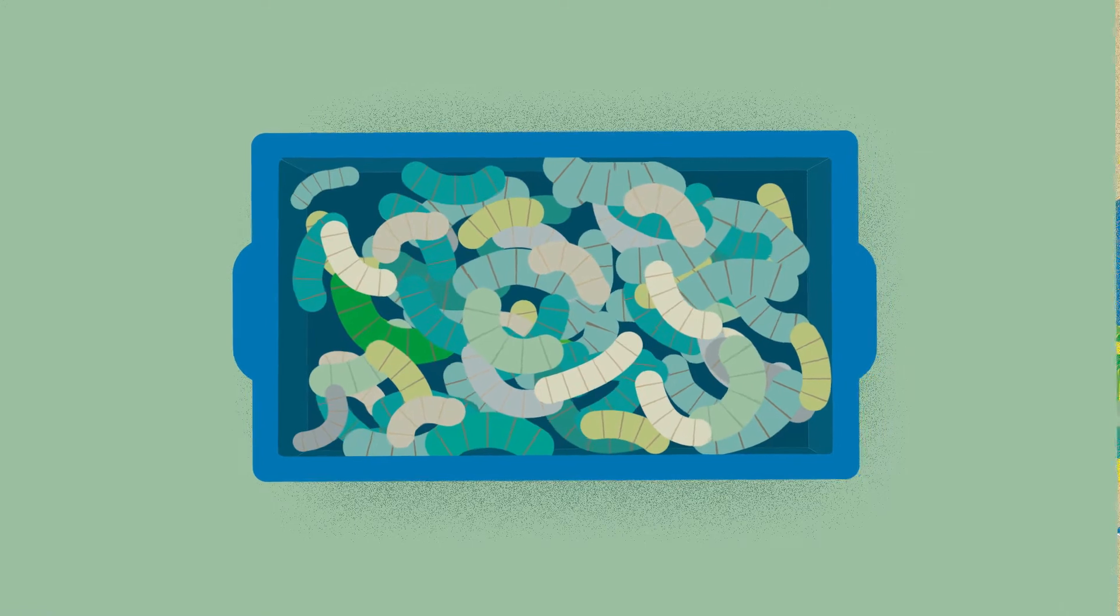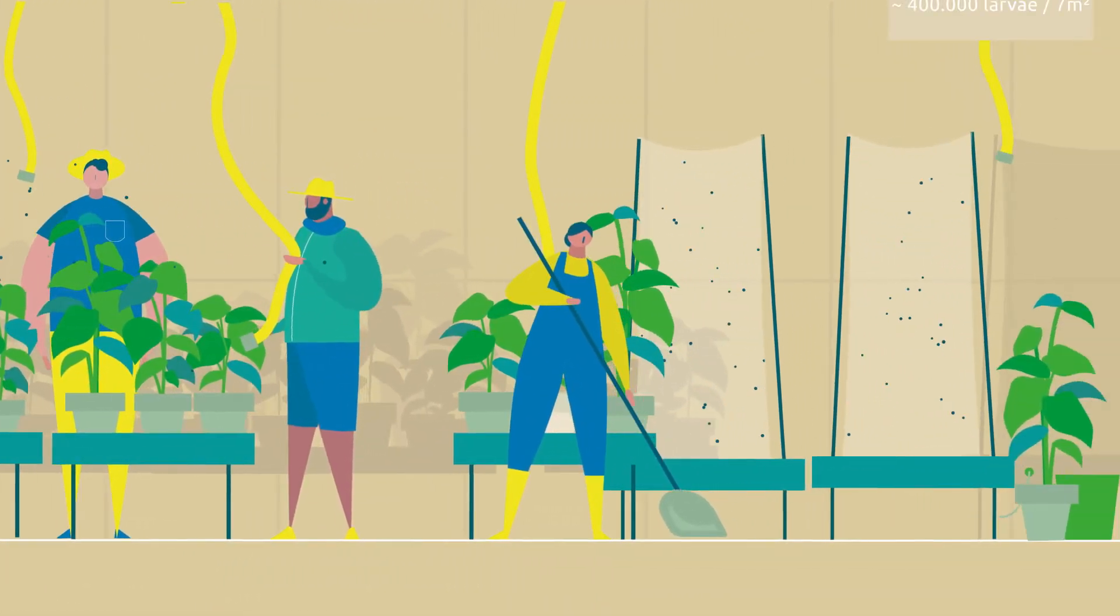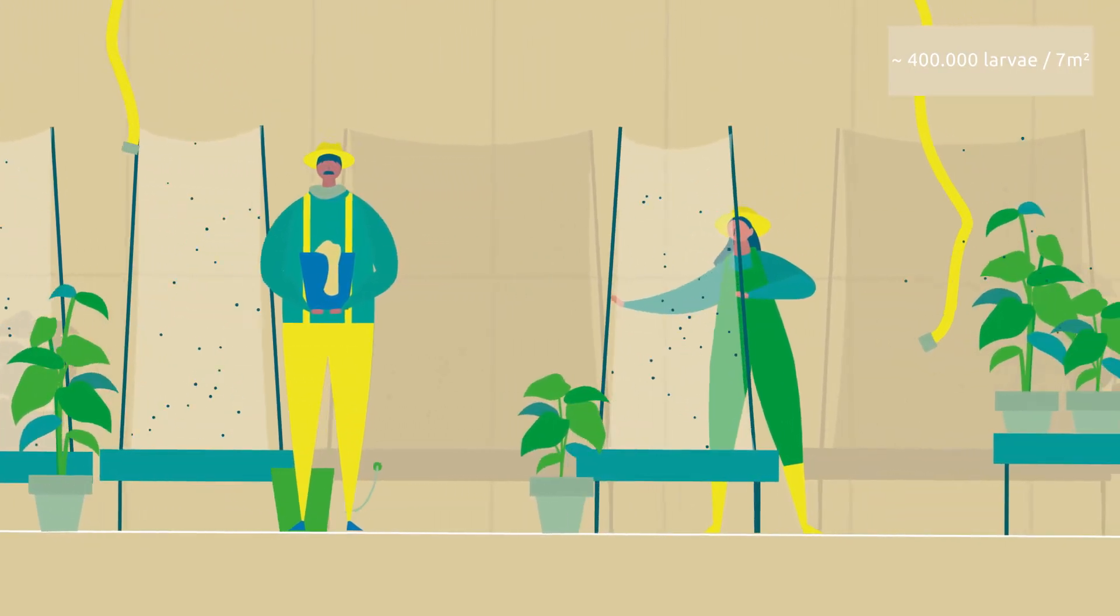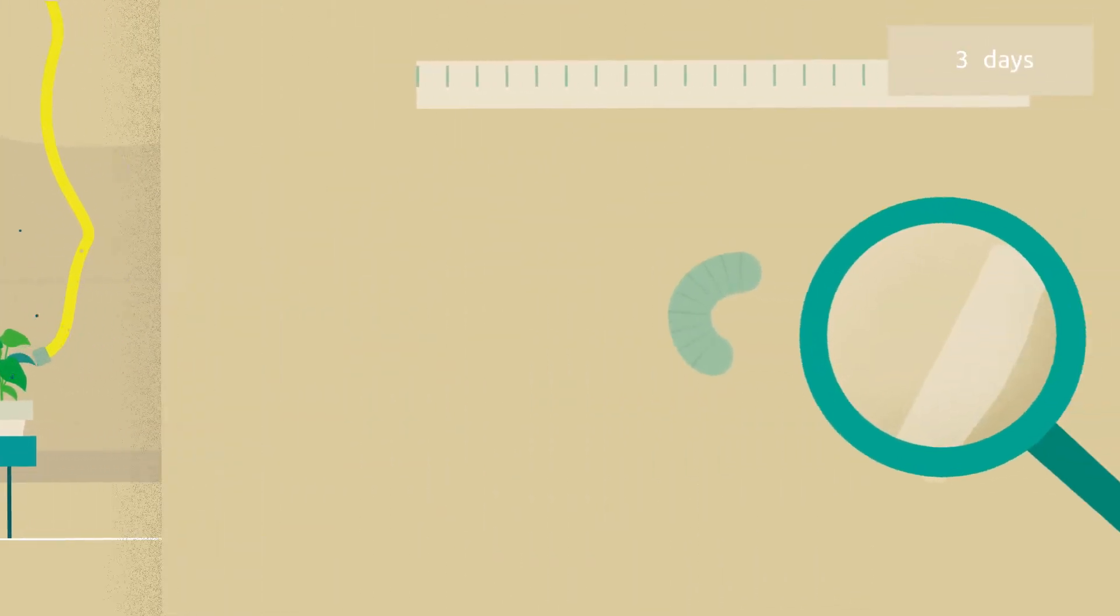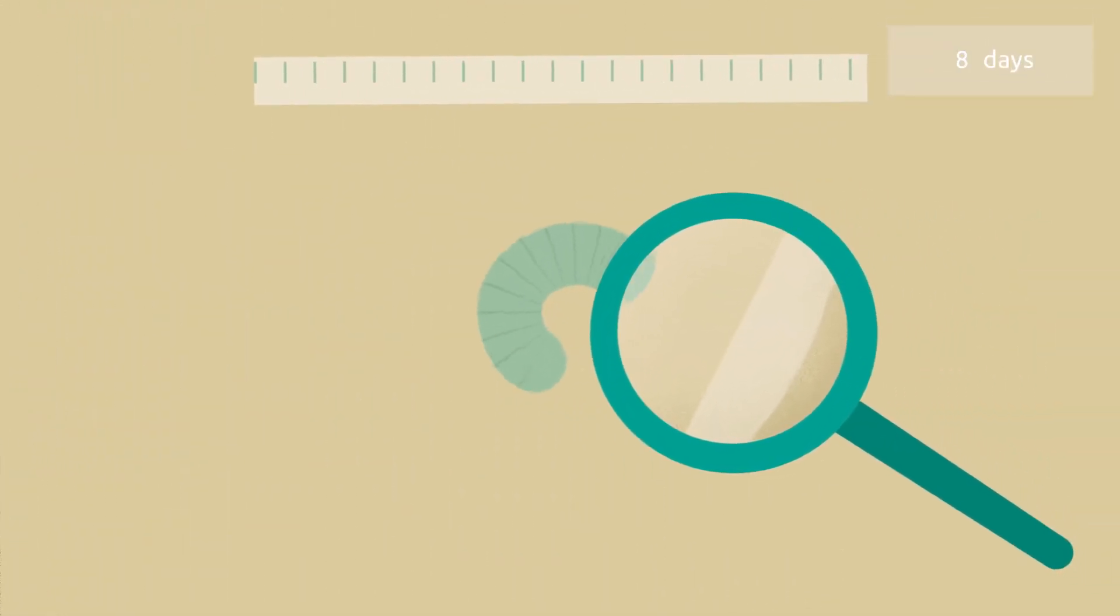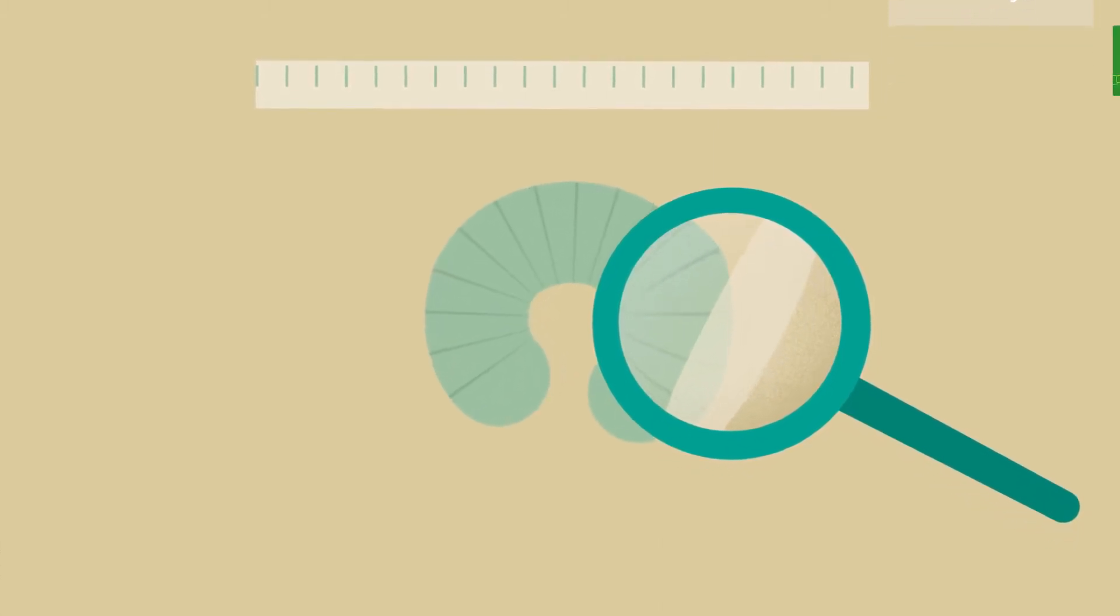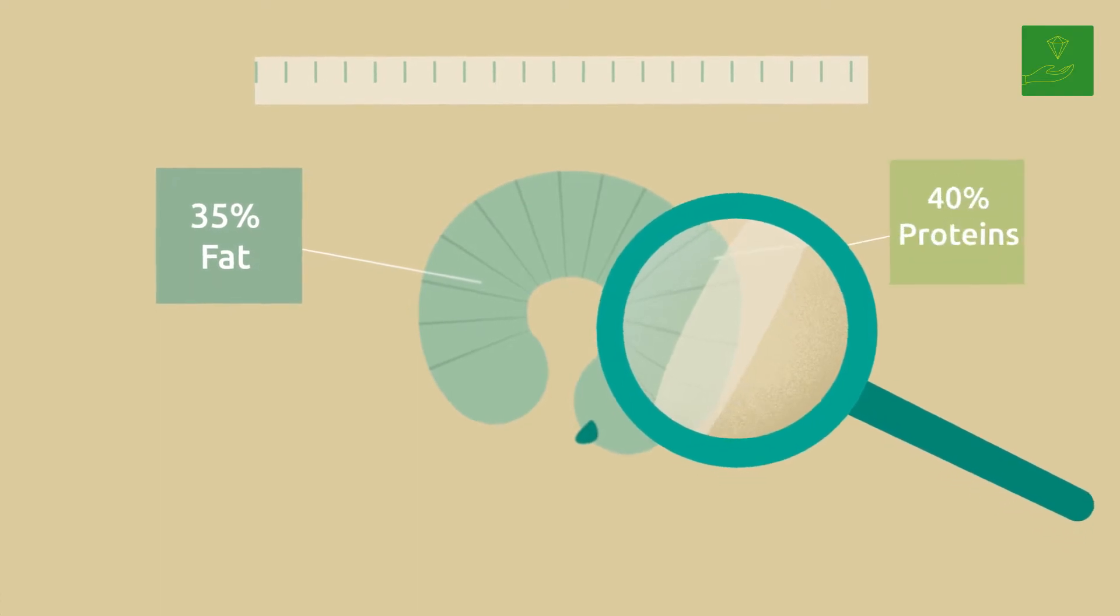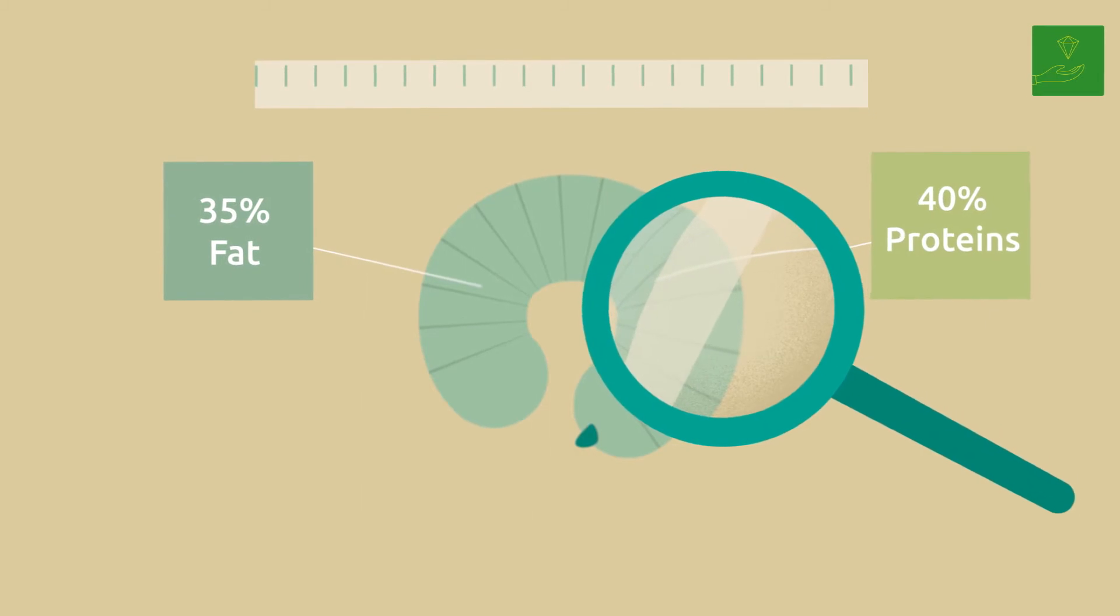These black soldier fly larvae are of incredible value. About 400,000 larvae can be kept in 7.5 square meters. They grow very fast, feed on waste materials, and once harvested and dried, the dry mass contains 35% fat and 40% proteins, a promising source for animal feed.